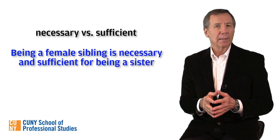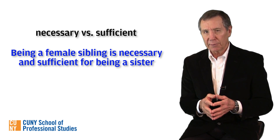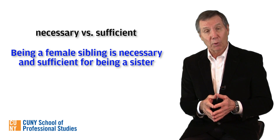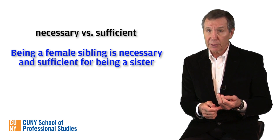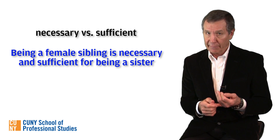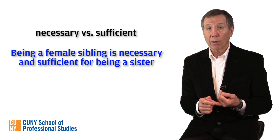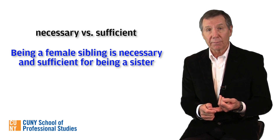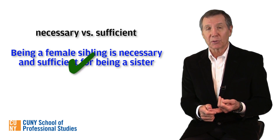Being a female sibling is a necessary and sufficient condition for being a sister. This means two things. First, in order to be a sister, you must be female and have a sibling — that is to say, a brother or a sister. Second, if you are a female and have a sibling, that by itself is enough to make you a sister. And both of these statements are true.